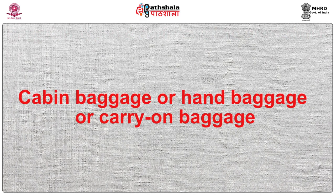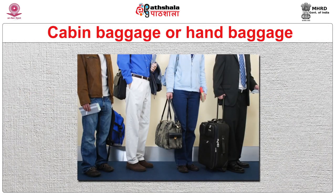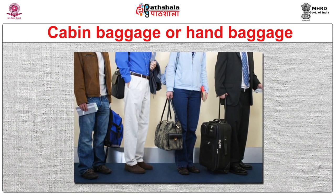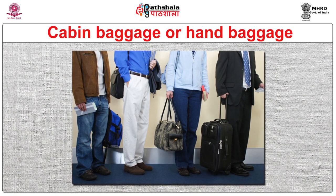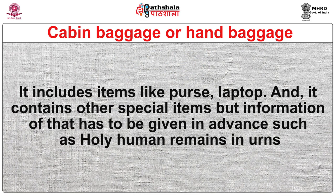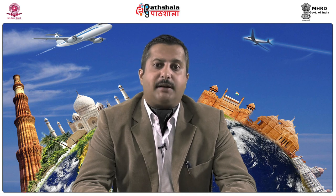Cabin baggage is baggage that is carried and stored in the cabin and is in full control and custody of the passengers. It is also known as carry-on baggage. It includes items like purses and laptops, and it may contain special items — information about which has to be given in advance — such as pets or holy human remains in urns. Prior to carriage of cabin baggage, assessment of the size, number, and weight of items should be done as per the air operator standards, and the weight aspect with regard to cabin baggage should be checked.